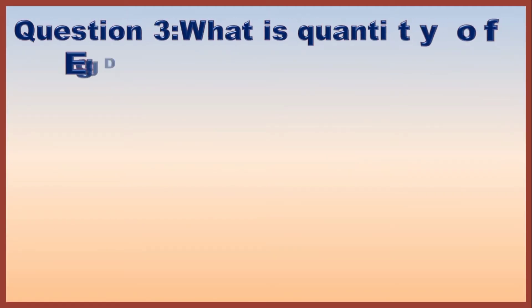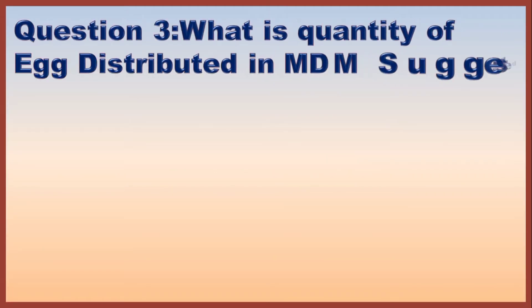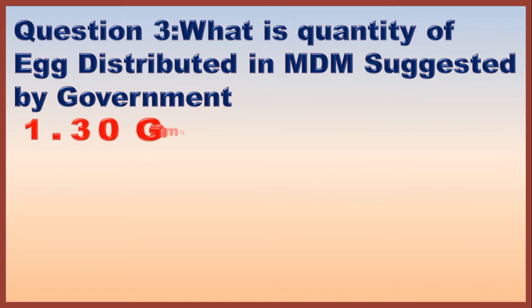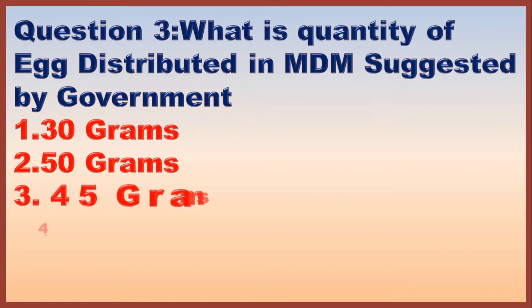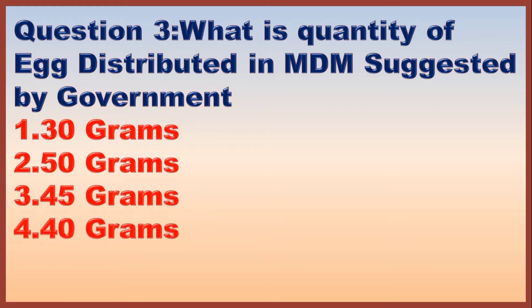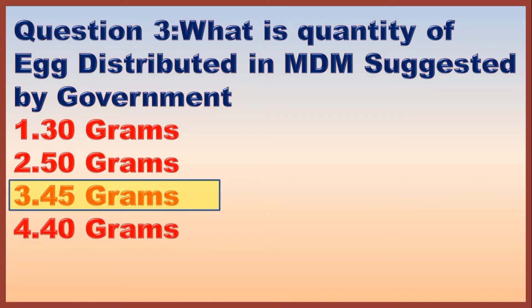Question 3. What is the quantity of egg distributed in MDM as suggested by the government? Correct answer is option 3: 45 grams.